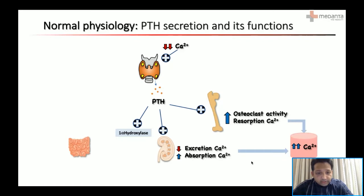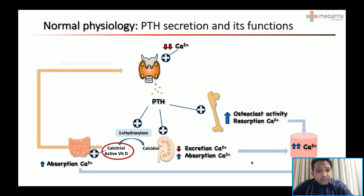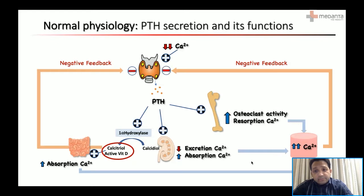Also in the kidneys, PTH acts on the enzyme 1-alpha hydroxylase, which is responsible for converting calcidiol to calcitriol — active vitamin D — which helps in absorption of calcium, again leading to increased calcium levels in the blood. Active vitamin D also initiates a negative feedback on the parathyroid gland to stop production of parathyroid hormone. Similarly, increased calcium levels in the blood also have a negative feedback on the parathyroid gland to signal it to stop parathyroid hormone production.